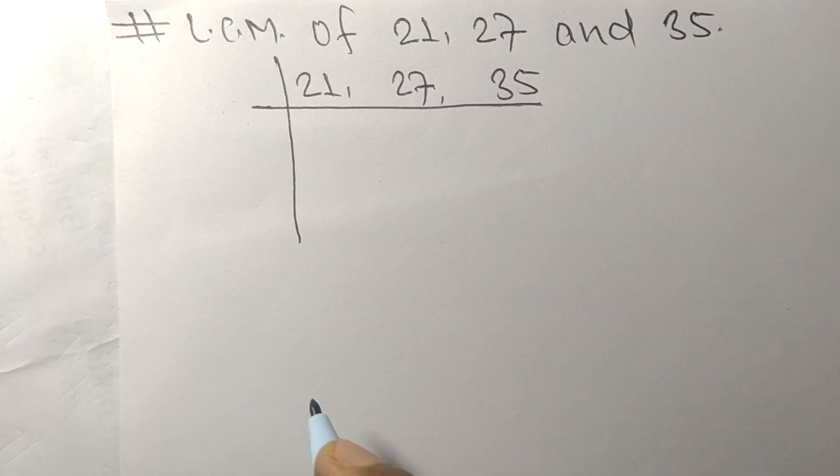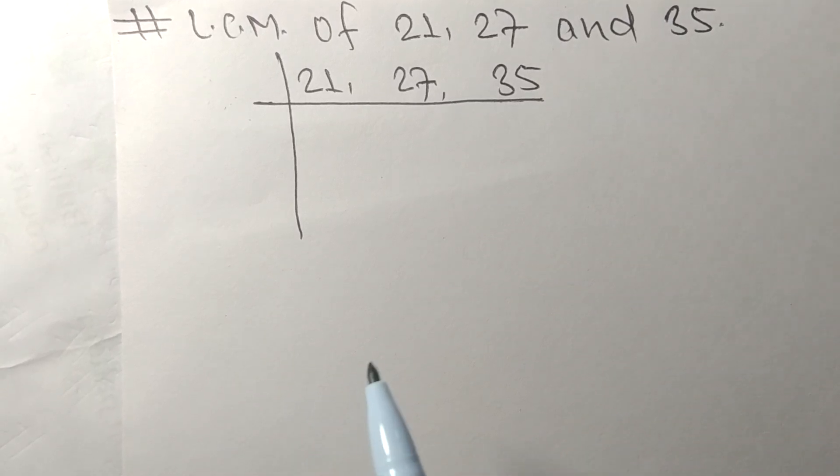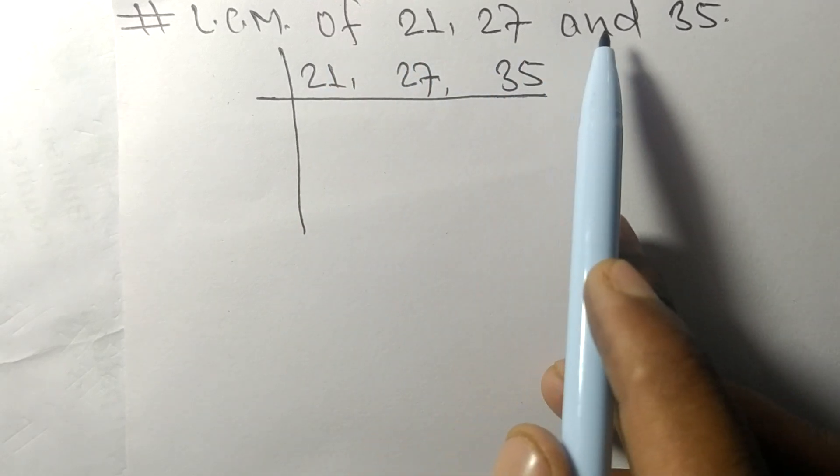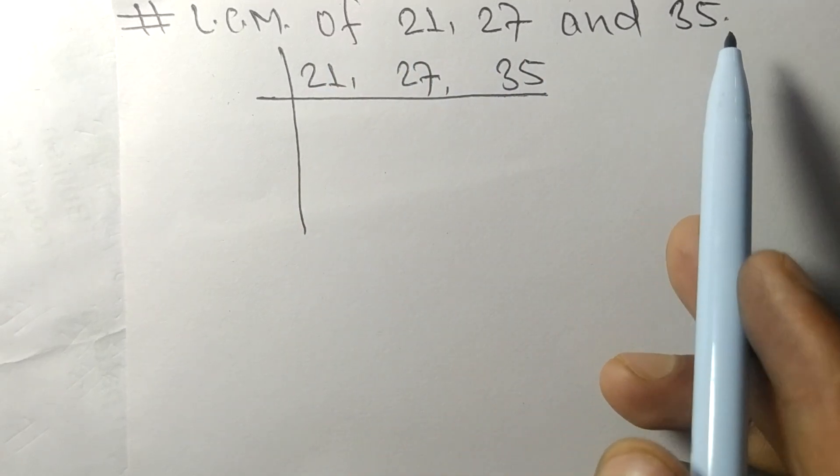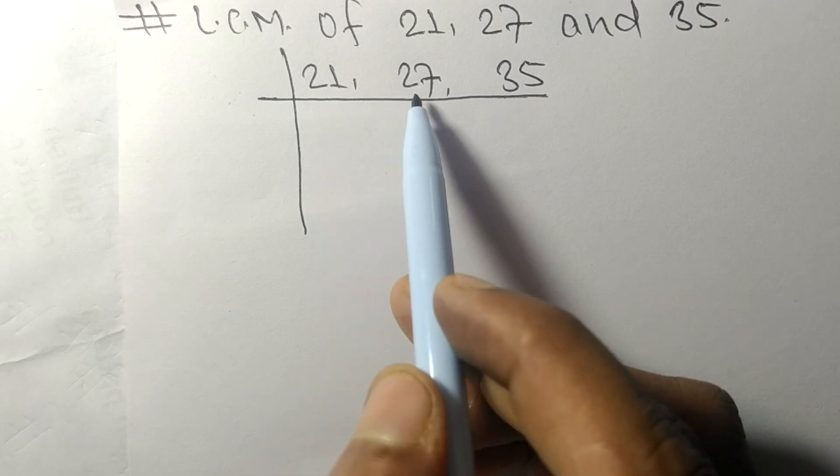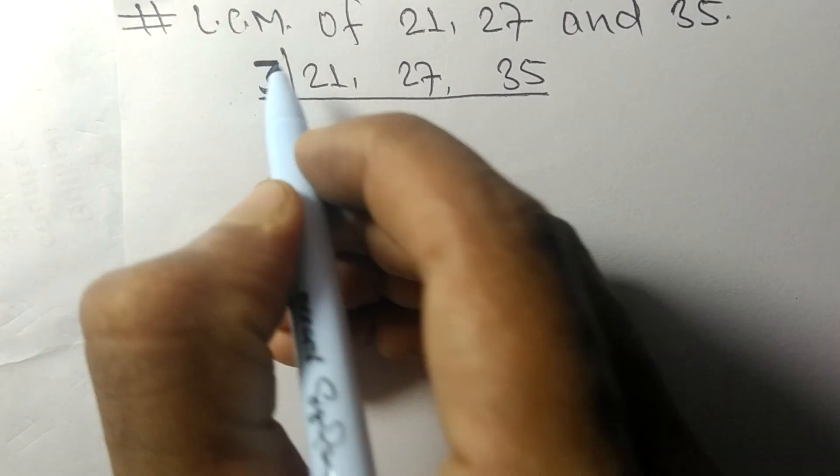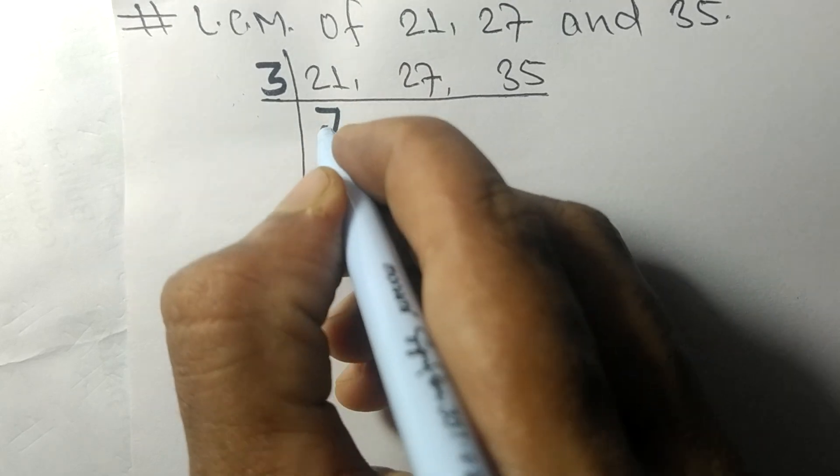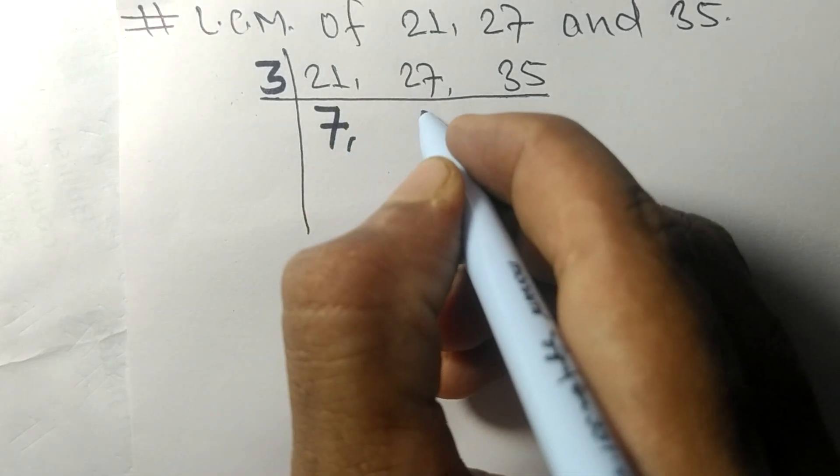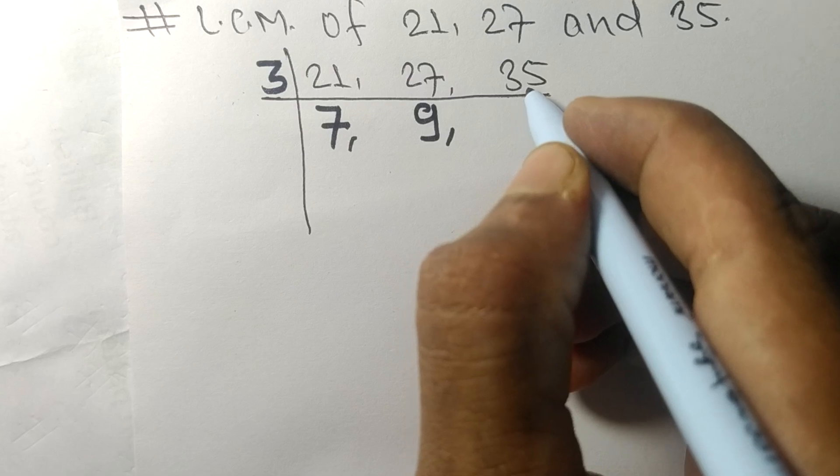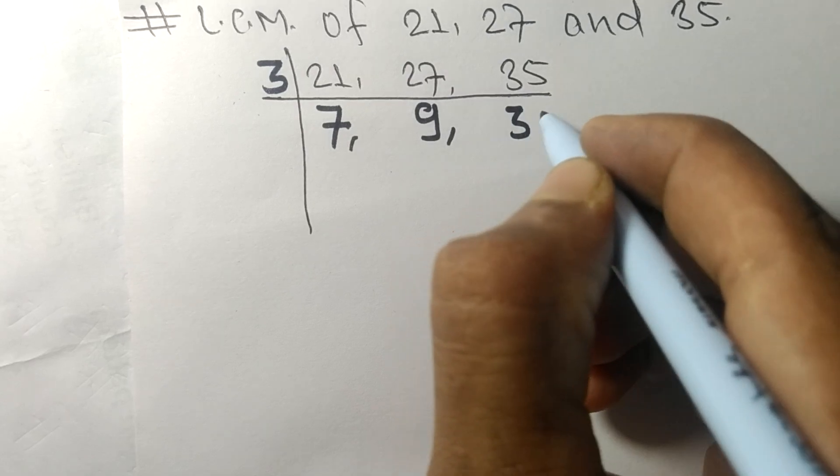Today in this video we shall learn to find the LCM of 21, 27, and 35. 21 and 27 are divisible by 3. 3 times 7 makes 21, 3 times 9 makes 27. 35 is not divisible by 3, so it remains the same.